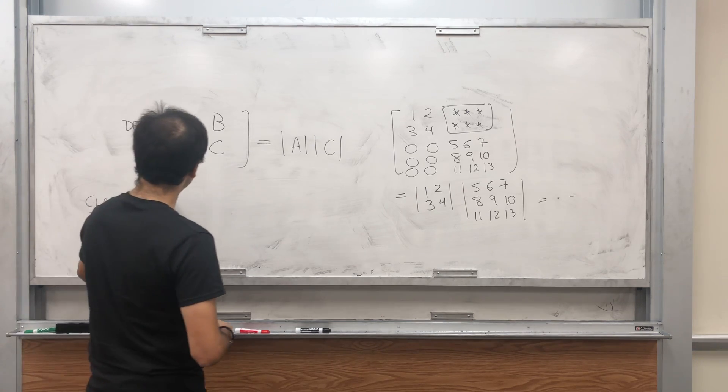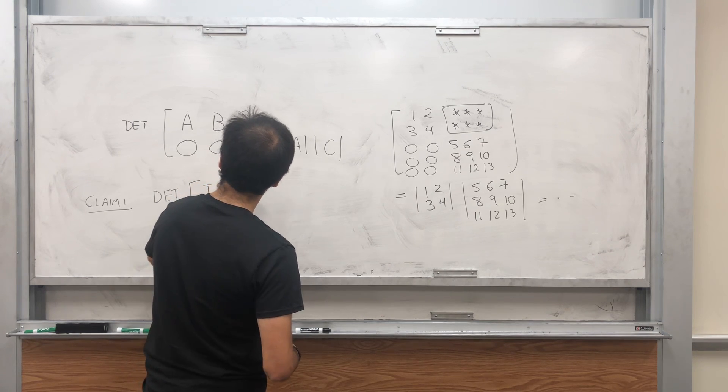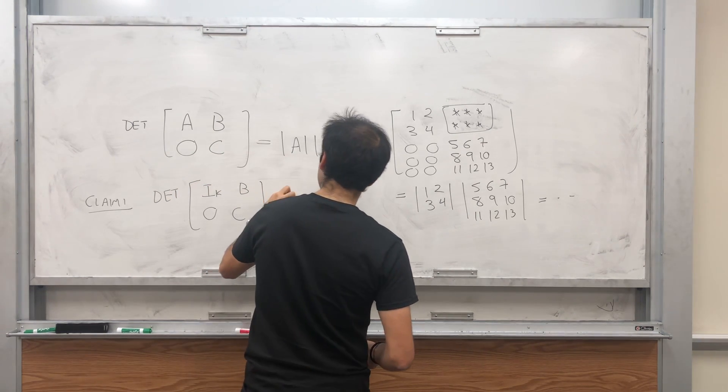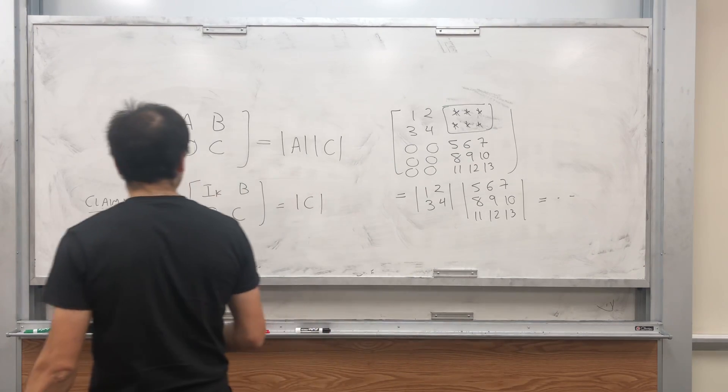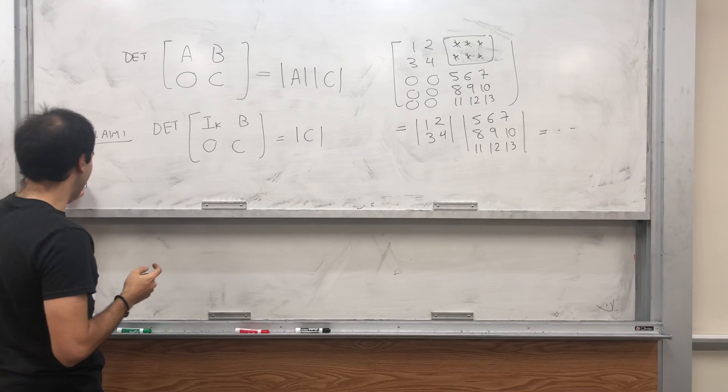Claim one: the determinant of [[I_k, B], [0, C]] is just the determinant of C, and the way you do this is just by induction on k.